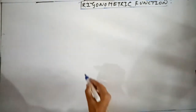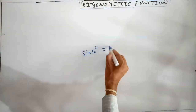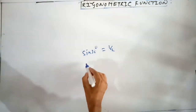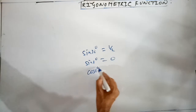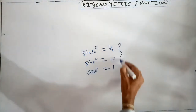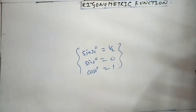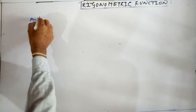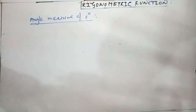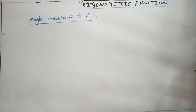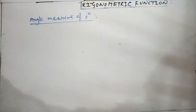अब इस वीडियो में या इस लेक्चर में हम देखेंगे — 0 degree का angle measure क्या होता है। उसके लिए सबसे पहले एक standard unit circle construct करना पड़ेगा।